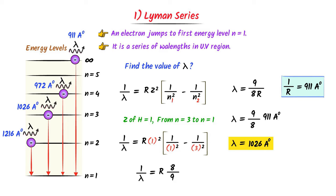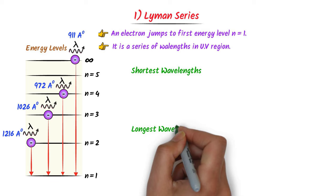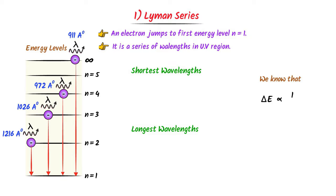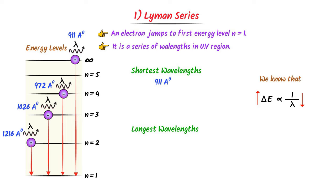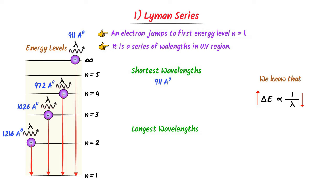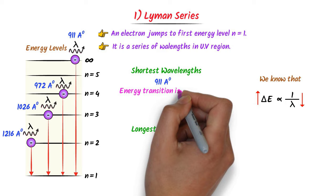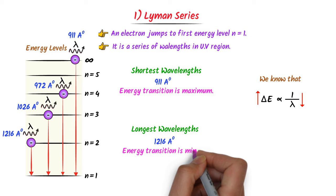The shortest and longest wavelengths of Lyman series: since ΔE is inversely proportional to wavelength, a larger energy difference gives a shorter wavelength. When an electron jumps from infinity to n = 1, we get the shortest wavelength: 911 Å. When an electron jumps from n = 2 to n = 1, we get the longest wavelength: 1216 Å. For shortest wavelength, energy transition is maximum; for longest wavelength, energy transition is minimum.